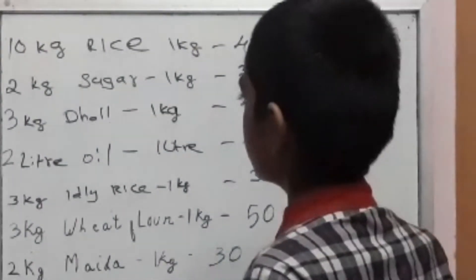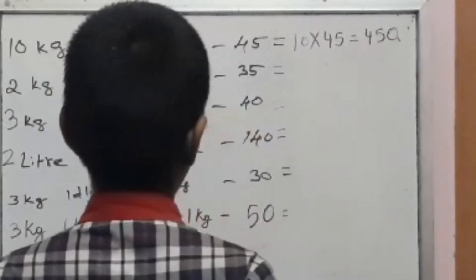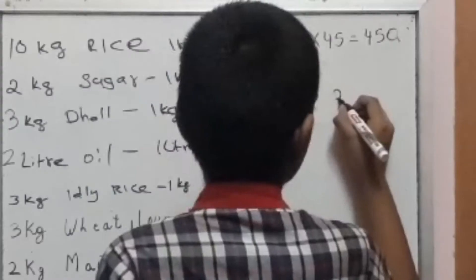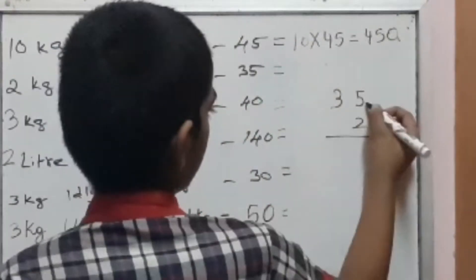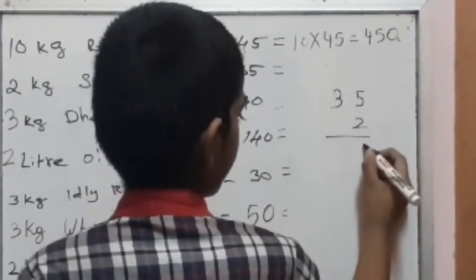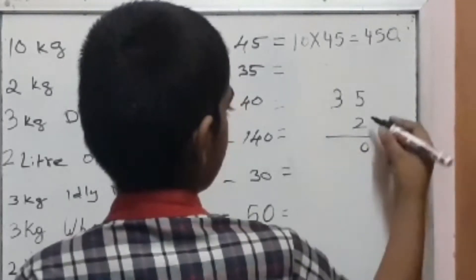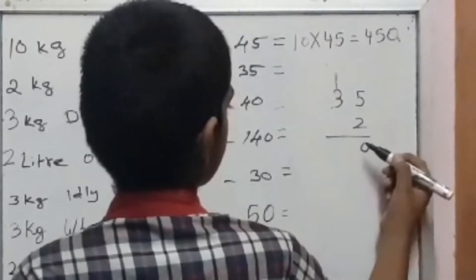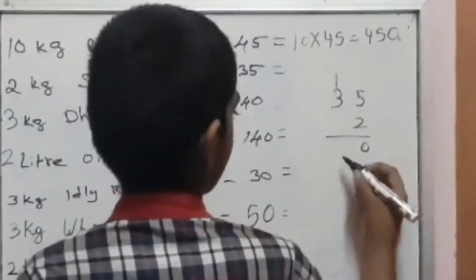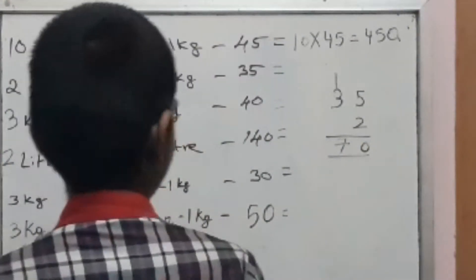2 kg rice, 1 kg equal to 35. So multiply 35 into 2. 5 twos are 10, put 0 and 1 carry over. 2 threes are 6, 6 plus 1 is 7. So the answer is 70.